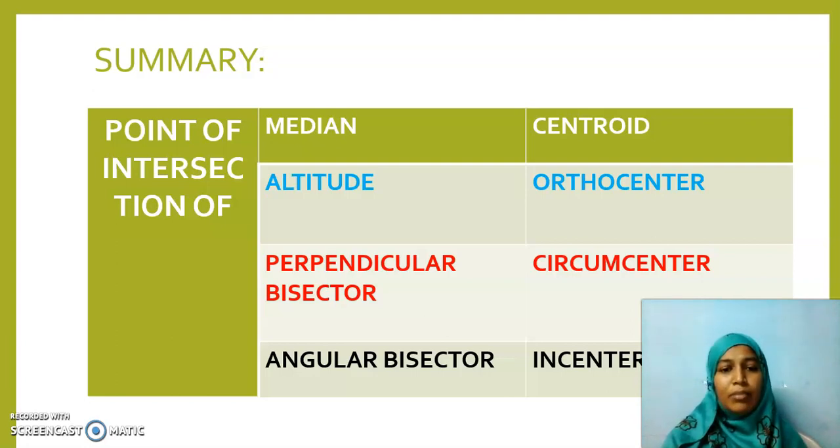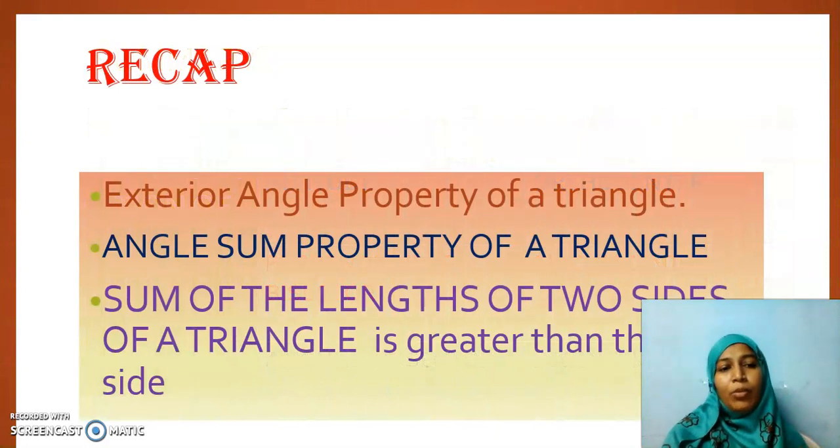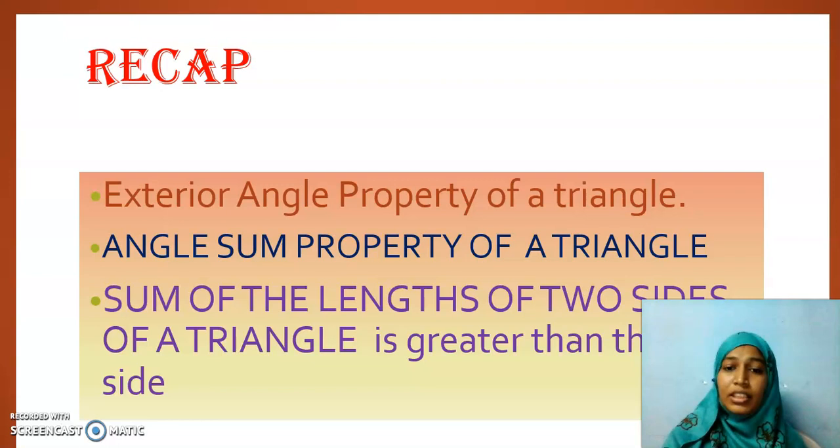Median meet at a point called centroid. Altitudes meet at orthocenter. Perpendicular bisectors meet at circumcenter. Angular bisectors will meet at incenter. All these four terms will come across till 9th and 10th. So get familiar to these words. Then we learned about exterior angle property of a triangle. Then, you know what is angle sum property. Actually, exterior angle property states that the exterior angle is equal to sum of the interior opposite angles. Angle sum property states that the sum of all the angles in a triangle is equal to 180 degrees.